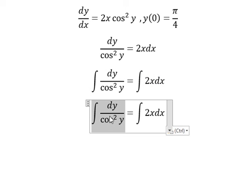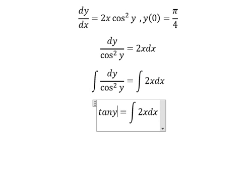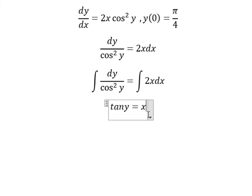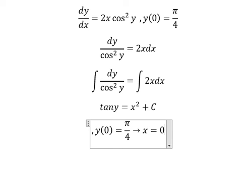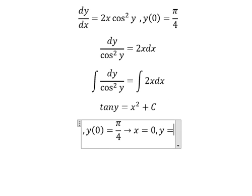The integration of this one we have tan y. The integration of 2x we have x² and I will put C. Now we have the condition that means when x equals to 0, y equals to π over 4.